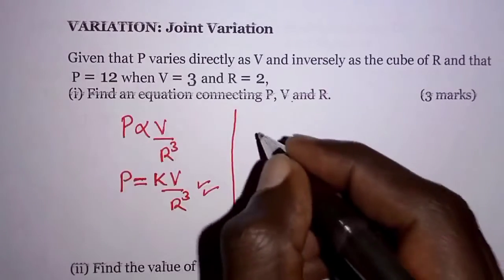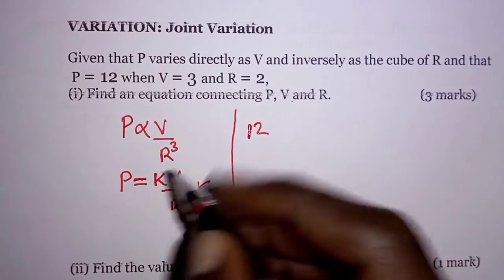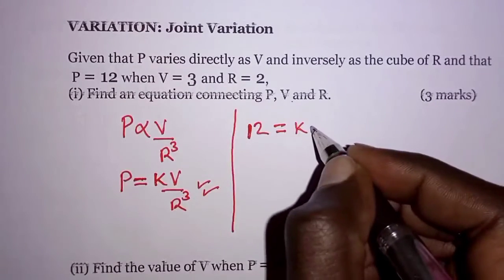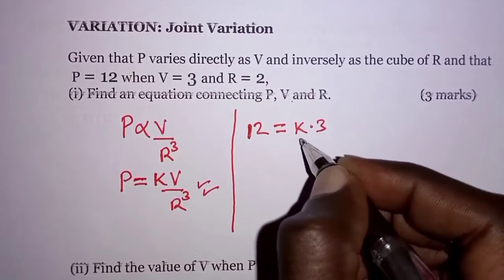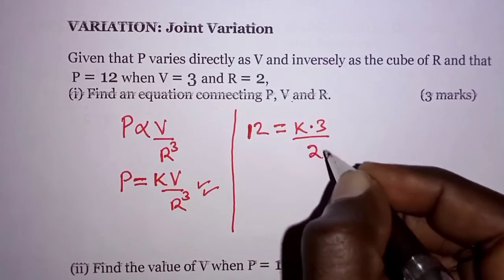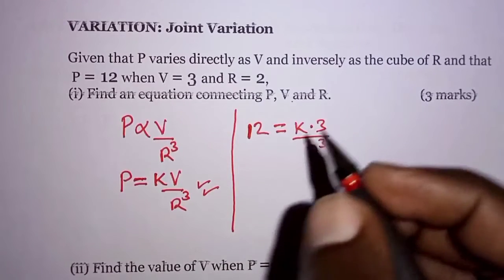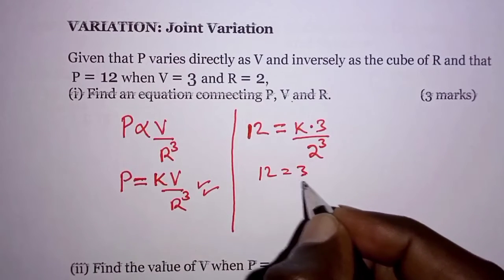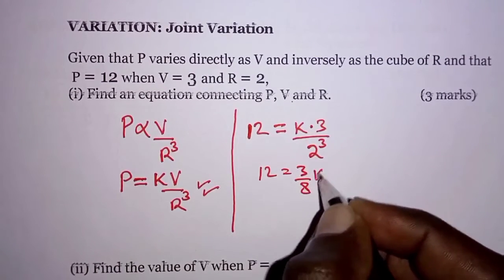So when P is 12, substituting in this equation, we have K times V, and V is 3, all over R cubed and R is 2, so we have 2 cubed. So this is 12 is equal to 3 over 8 K.